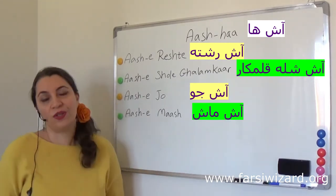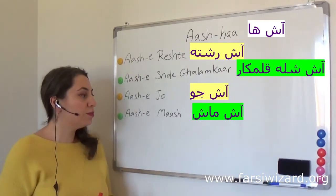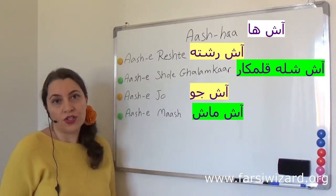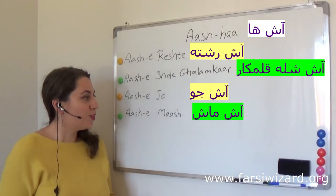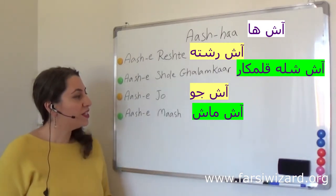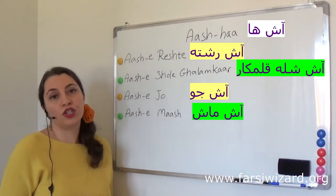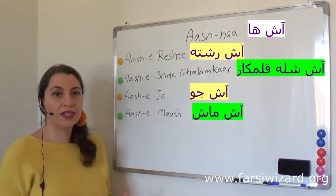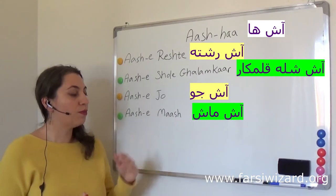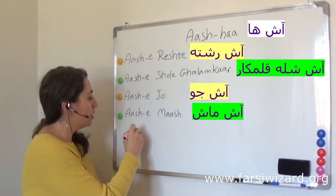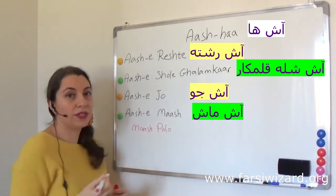The last one is Ash-e-Mash. Mash refers to mung beans — the little tiny green beans. So Ash-e-Mash means Ash of mung beans, and this one is pretty cool. I personally love this, it's one of my favorites. We also have a rice dish made with mash called mash polo, which is mung beans and rice. If you remember from the other video, polo meant rice — so we also have mash polo, and I'm putting it here in case you come across the word.